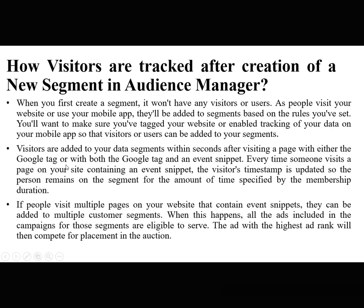Visitors are added to your data segments within seconds after visiting a page with either the Google Tag or with both the Google Tag and an event snippet. Every time someone visits a page on your site containing an event snippet, the visitor's timestamp is updated so the person remains on the segment for the time specified by the membership duration. If people visit multiple pages containing event snippets, they can be added to multiple customer segments, and all the ads included in the campaign for those segments are eligible to serve — the ad with the highest ad rank will compete for placement in the auction.